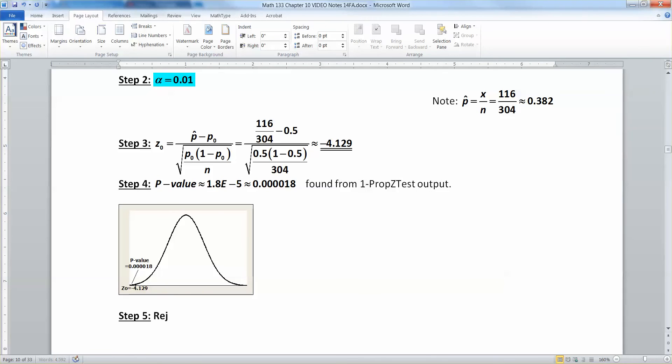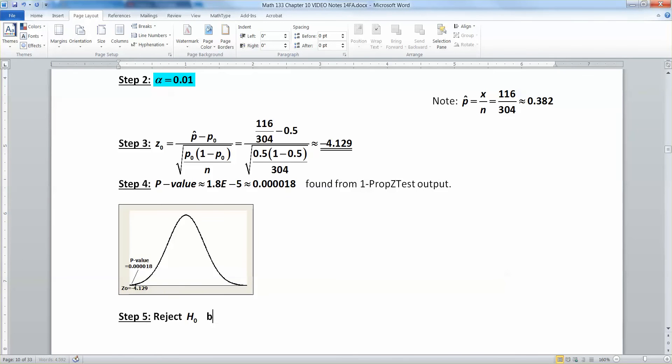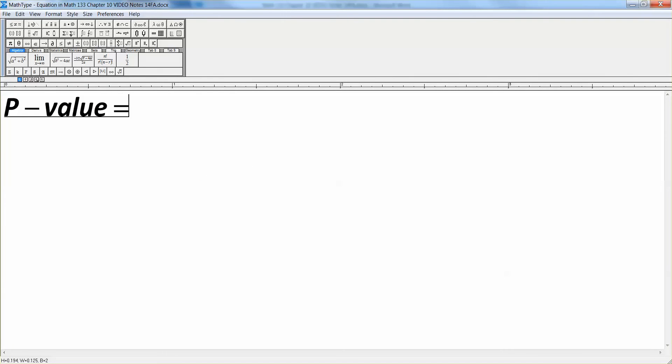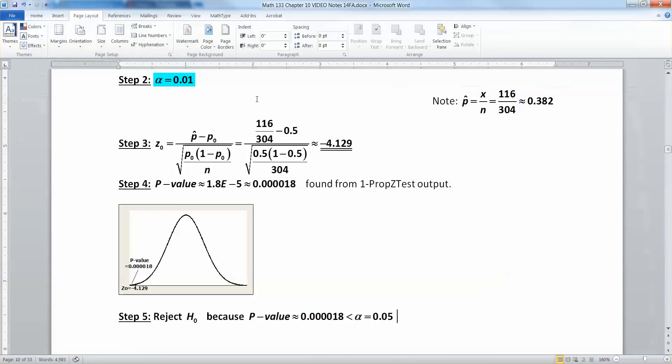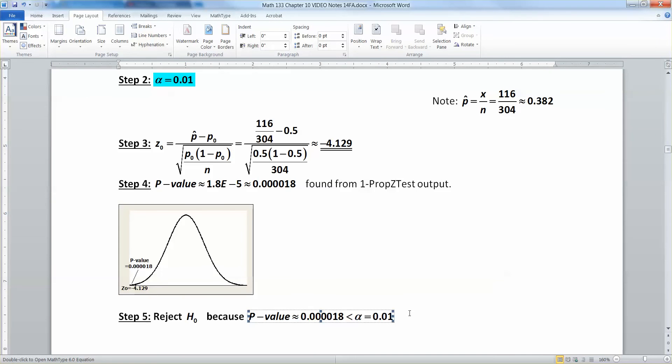And, then you have to say why. You can't just say reject. You say because the p-value which is 0.000018 is less than alpha which was 0.01. So, therefore, you reject and that's why you have to say that.